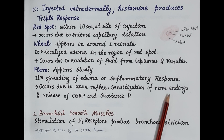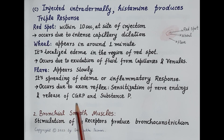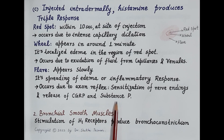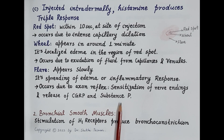The flare occurs due to axon reflex, that is sensitization of nerve endings in the affected local area. These sensitized nerve endings further release calcitonin gene-related peptide (CGRP) and substance P, and these neurotransmitters further induce vasodilation and spreading of the inflammatory response over a wider area.